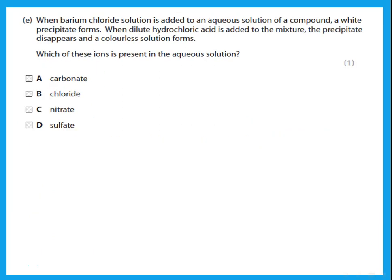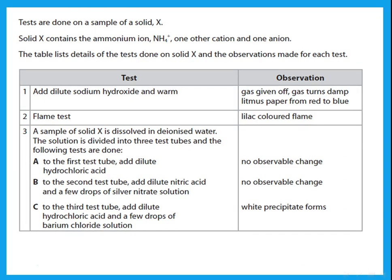When barium chloride solution is added to a compound, a white precipitate forms. When dilute hydrochloric acid is then added, the precipitate disappears and a colorless solution forms. Barium chloride forms a precipitate with both sulfate and carbonate. The difference is: if acid is added and the precipitate disappears, it is carbonate. If it remains, it is sulfate. In this case, it is carbonate.